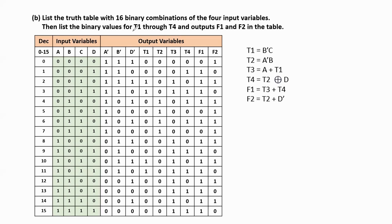In this truth table we take rows 0 to 15. There are 4 input variables a, b, c, d. So 2^4 = 16 total combinations. The generalized formula is 2^n where n is the number of input variables. We should find the binary values for t1 through t4 and outputs f1 and f2 using these expressions.